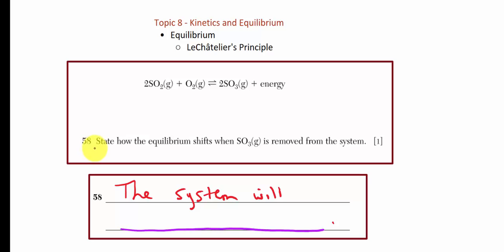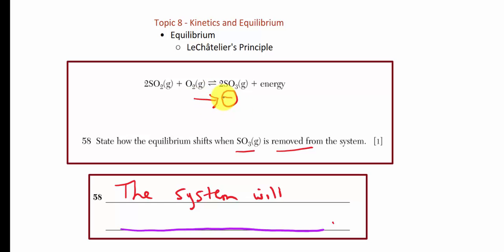Question 58: State how the equilibrium shifts when SO3 gas is removed from the system. Looking at the equation, SO3 appears on the product side. Removing some SO3 puts a negative stress there, disabling the reverse reaction. The forward reaction continues at its regular rate, but the reverse reaction is crippled. By Le Chatelier's principle, when you remove something, the system attempts to replace it — so the equilibrium shifts to the right.